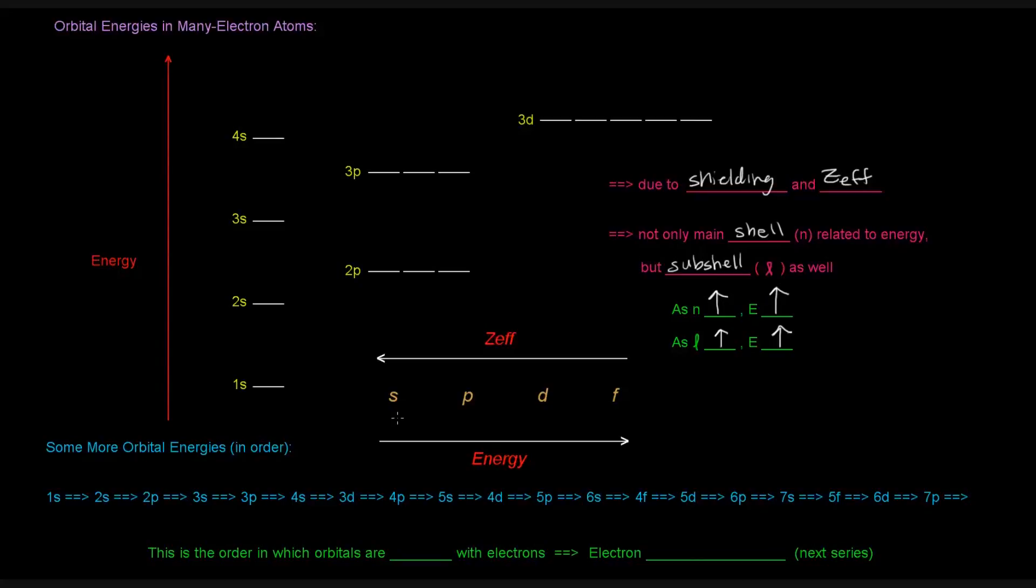We see that here, and that's again due to the effective nuclear charge that we mentioned in the previous video. The s orbitals have lower energy than the p, which have lower energy than the d, and lower energy than the f. So the f orbitals are the highest in energy. And that's because of the effective nuclear charge differences, which we talked about in the previous video.